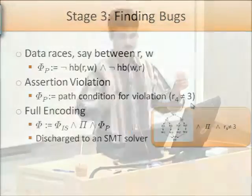For bug finding: a data race between a read and a write is simply an unordered read and write, which can be modeled directly as a formula. Assertion violations use the corresponding path condition, and the full encoding handles both.